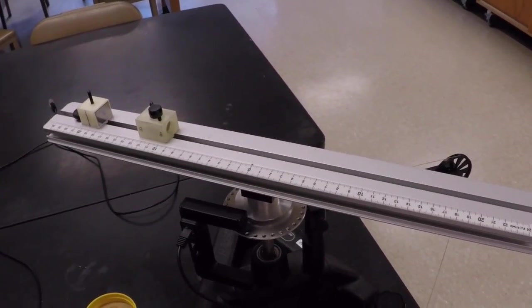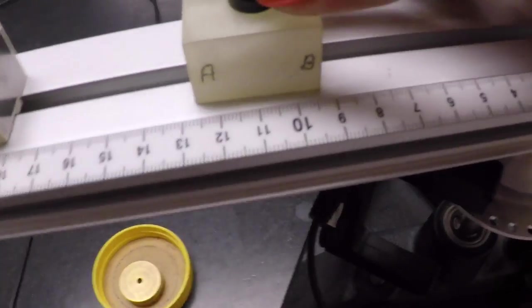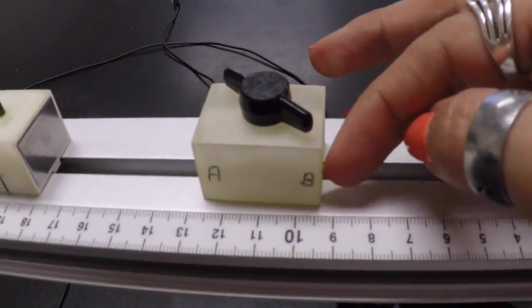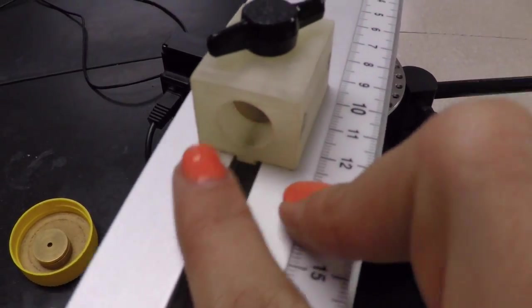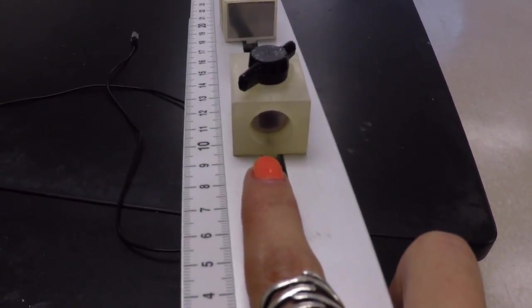So your setup looks like this. On the rotating platform here you have this block that has side A and B. Inside here you have a magnet that has different strength.